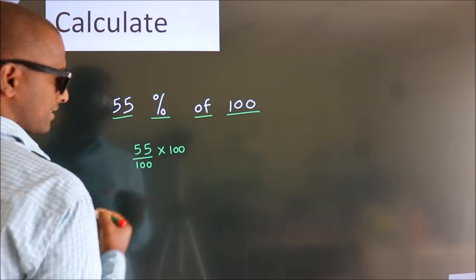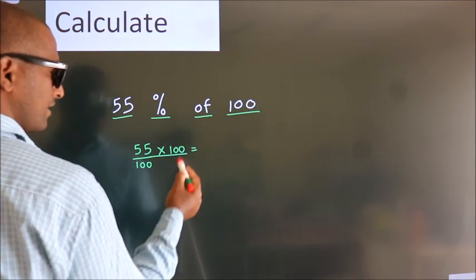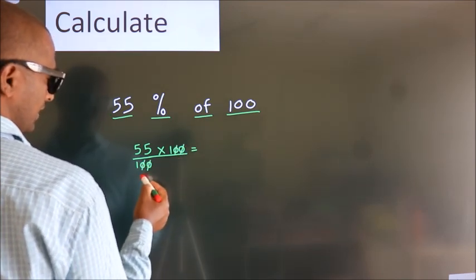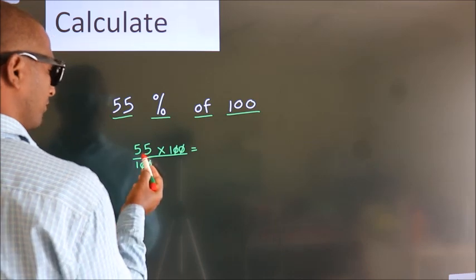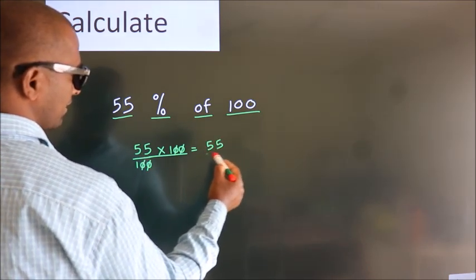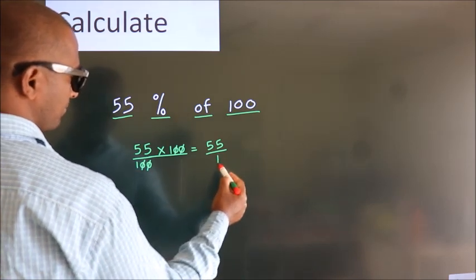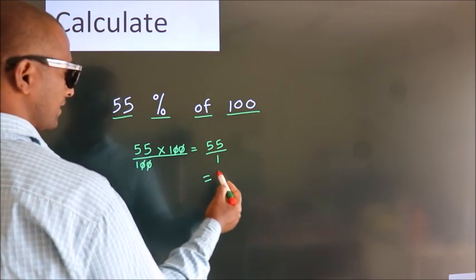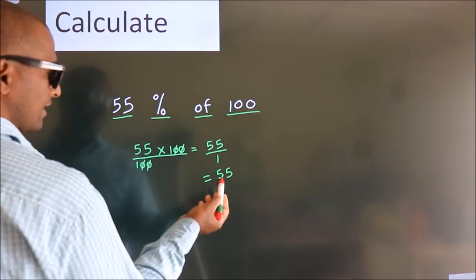Next, I cancel this 0 with this, this 0 with this. We are left with 55 into 1, which is 55. In the denominator, 1. 55 by 1 is 55. This is our answer.